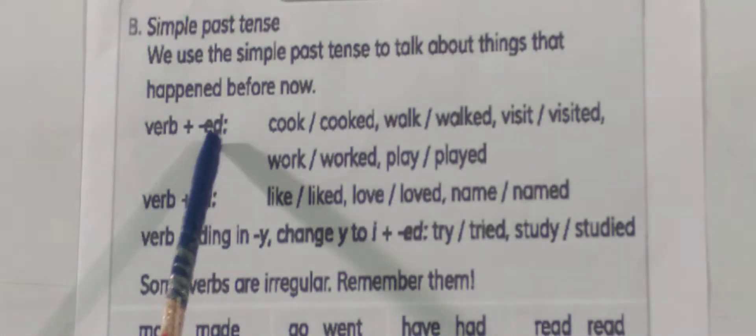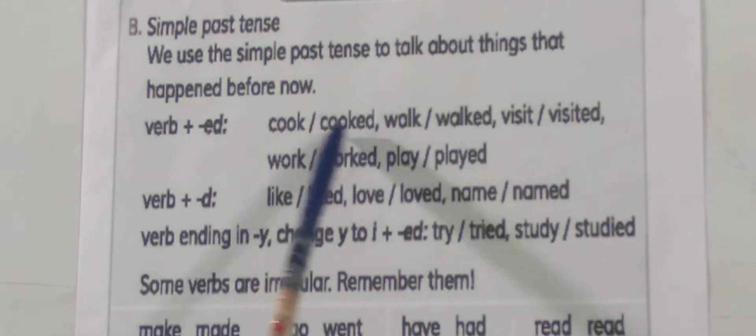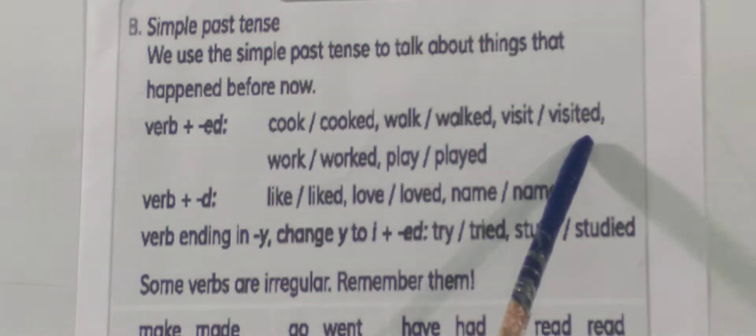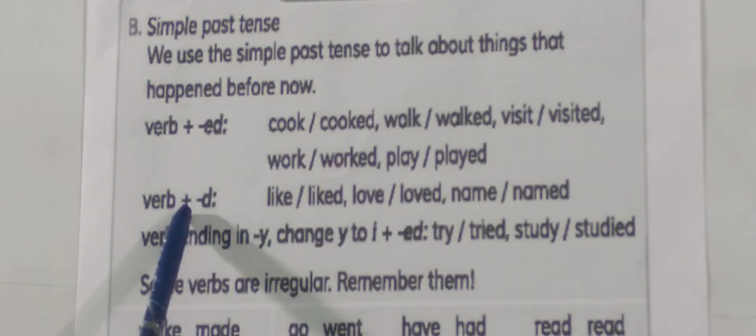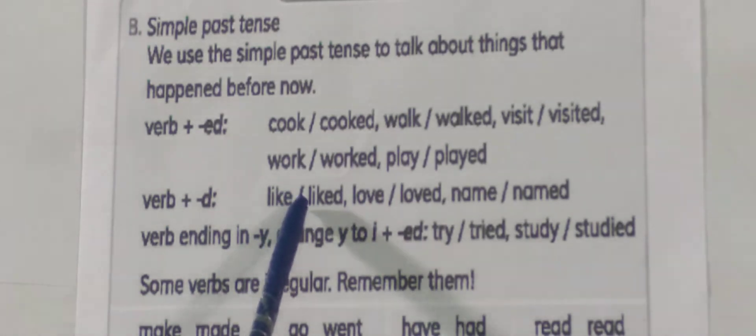Now let's see the structure. Verb plus ed: cook becomes cooked, work becomes worked, visit becomes visited, play becomes played. When a verb ends with d, like like becomes liked, love becomes loved, name becomes named.